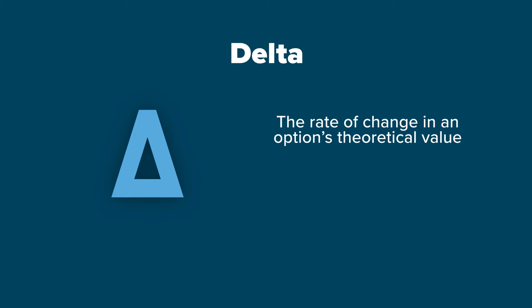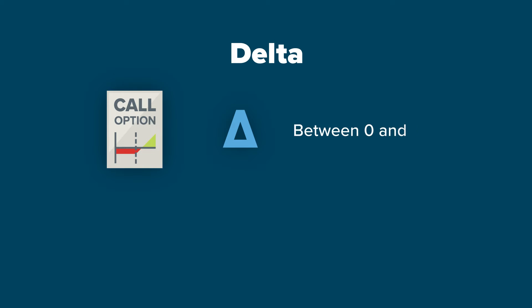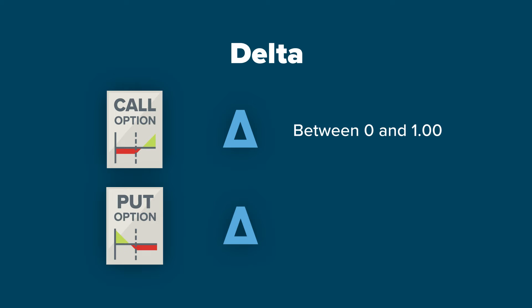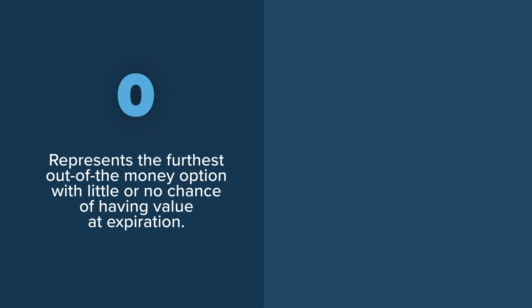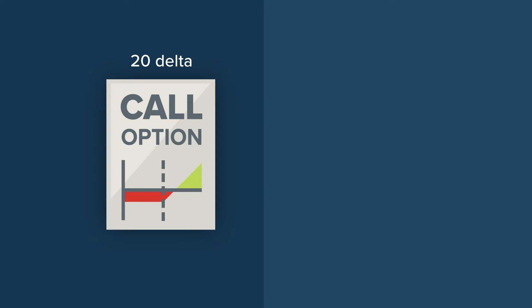Delta is defined as the rate of change in an option's theoretical value for a one-unit change in the price of an underlying. A call option's delta will be between 0 and 1.0, while a put option's delta will range between 0 and negative 1.0. Zero represents the furthest out-of-the-money option with little or no chance of having value at expiration, and 1 or negative 1 represents the furthest in the money, having the same rate of change in value as the equity it is derived from. Consider a call option with a 0.2 delta, sometimes referred to as a 20 delta.